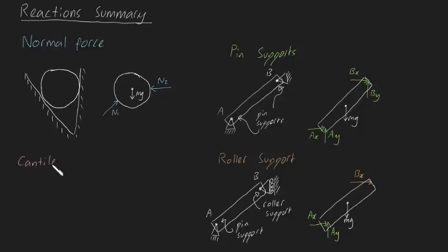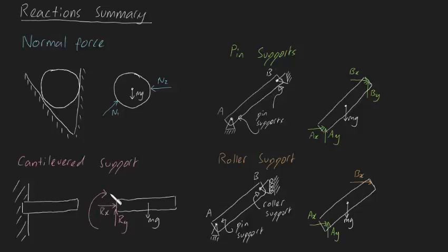And lastly, we have the cantilevered support. This is where we have a beam embedded in one end where it can't move and can't rotate. Because the beam can't move at this point, there are going to be reaction forces RX here and RY here. And because the beam can't even rotate at this point either, there's also going to be a reaction moment M here too.